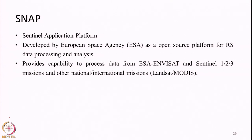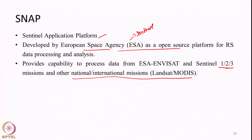SNAP - the Sentinel Application Platform - was developed by the European Space Agency as a free and open source platform for remote sensing data processing and analysis. It was developed to process data from Sentinel satellites: Sentinel-1, 2, and 3. But in addition to those, all other commonly used satellite data can also be processed within this tool. When you search for the SNAP toolbox you have options to download only the Sentinel-1 SAR toolbox, only the Sentinel-2 optical toolbox, or the entire combined SNAP toolbox platform.